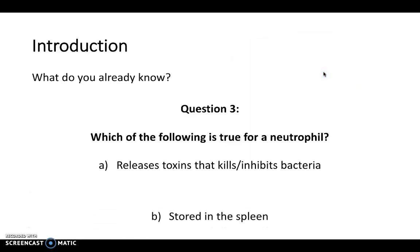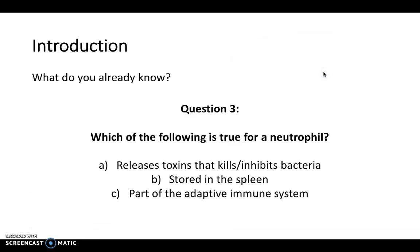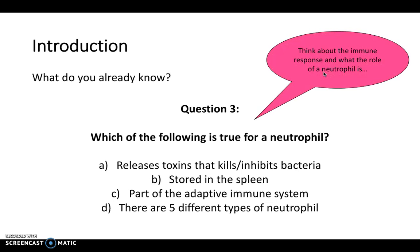And question 3. Which of the following is true for a neutrophil? Does it release toxins that kill or inhibit bacteria? Is it stored in the spleen? Is it part of the adaptive immune system? And are there five different types of neutrophil?